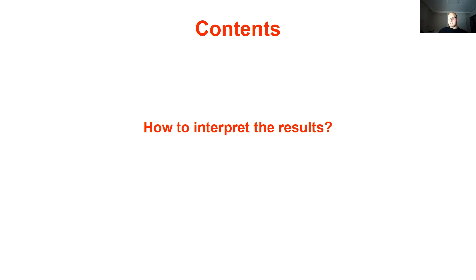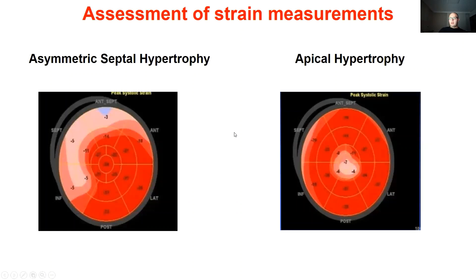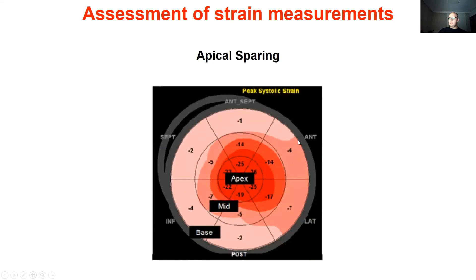Here are some examples for interpretation of results. In a patient with anterior myocardial infarction, the strain traces show that segments in the anterior wall and anterior septum have reduced absolute strain values, and GLS is also reduced. For segmental analysis, pattern recognition is more important, as at the segment level speckle tracking has low reproducibility. In a patient with asymmetrical septal hypertrophy, strain values of the septum are reduced; in a patient with apical hypertrophy, there is a zone of reduced strain in the apex.